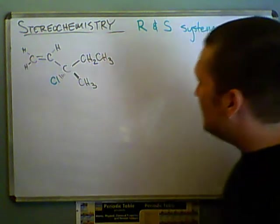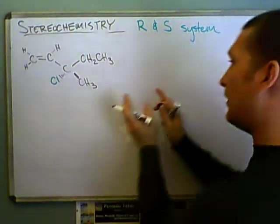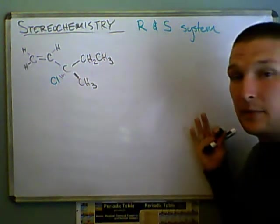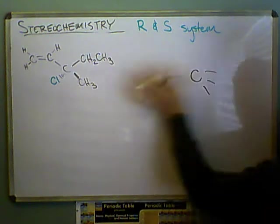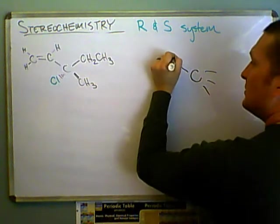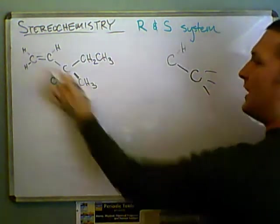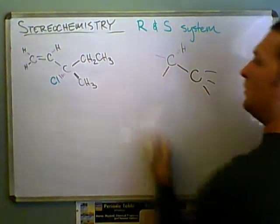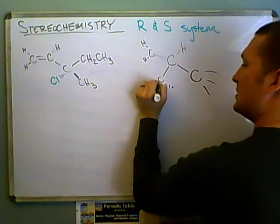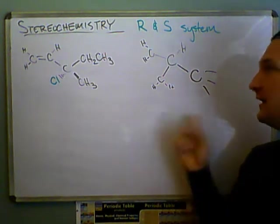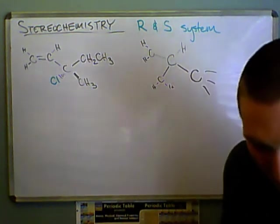Now we need to assign priority. Right away I see I have this double bond thing going on, so I'm going to need to deal with that. I'll go ahead and use some scratch paper and draw this out. Here's the central carbon. This is the group we're interested in — there's the carbon that's attached, which is attached to one hydrogen. This double bond system we're going to represent as two separate bonds, and it's attached to a C and two H's, and also a C and two H's. If you don't know why I did that, there's another video in this series that explains it in detail.